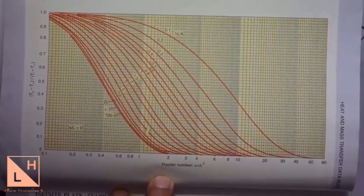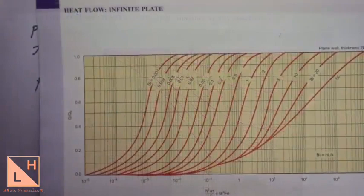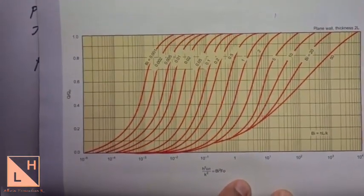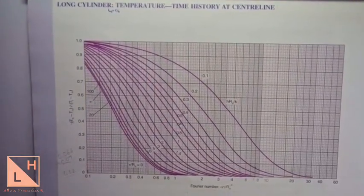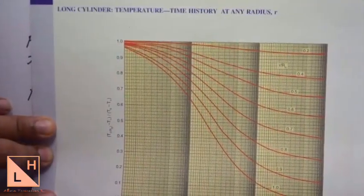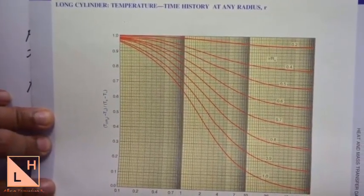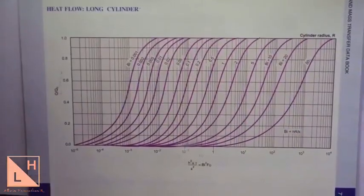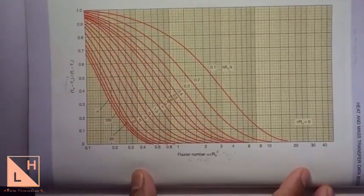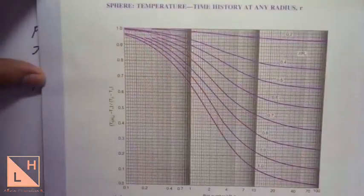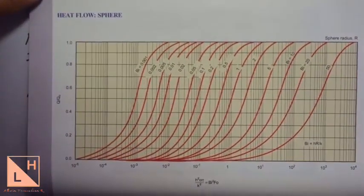There are six different charts total: temperature-time history at center, temperature-time history at any position x, and heat flow chart — repeated for infinite plate, long cylinder, and sphere. These charts are useful depending on what object is suddenly exposed to a fluid medium. When Biot number is greater than 0.1, you use these Heisler charts to solve unsteady state heat conduction problems. Practice more problems of this type for better understanding.